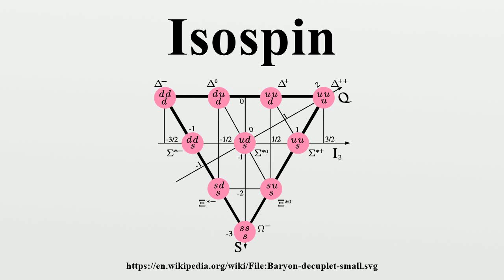Similarly to a spin-1/2 particle, which has two states, protons and neutrons were said to be of isospin-1/2. The proton and neutron were then associated with different isospin projections I3 equals +1/2 and -1/2 respectively. These considerations would also prove useful in the analysis of meson-nucleon interactions after the discovery of the pions in 1947. The three pions could be assigned to an isospin triplet with I equals 1 and I3 equals +1, 0, or -1. By assuming that isospin was conserved by nuclear interactions, the new mesons were more easily accommodated by nuclear theory.